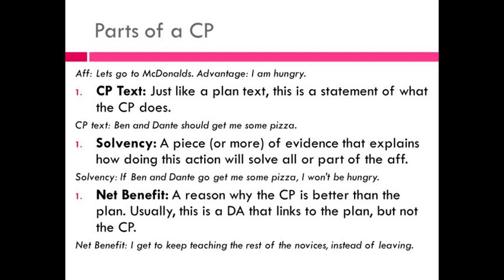So solvency here would be: if Ben and Dante go get me some pizza, then I won't be hungry — that solves the advantage to going to McDonald's. Instead of going to McDonald's, the alternative action is just having Ben and Dante go get me some pizza. It solves the advantage because if I get pizza, I won't be hungry, just like going to McDonald's would resolve my hunger. The third part is the net benefit — a reason why the counter plan is better than the plan. Usually this is a disadvantage that links to the plan but not to the counter plan.